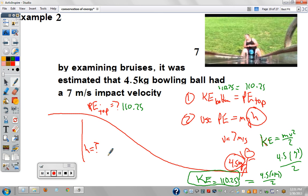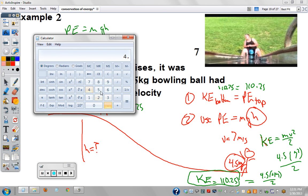And now I can use my formula to solve for height. 110.25 equals mass 4.5, PE equals mgh, times 9.8 times height. These two multiplied together: 4.5 times 9.8, 44.1.